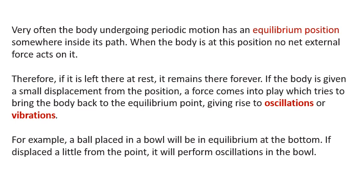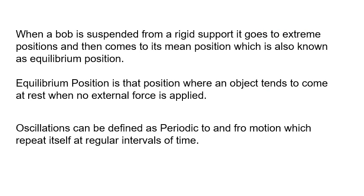For example a ball placed in a bowl will be in equilibrium at the bottom. If displaced a little from this point it will perform oscillations in the bowl. When a bob is suspended from a rigid support it goes to extreme position and then comes to its mean position, which is also known as equilibrium position.